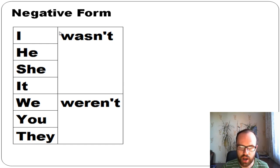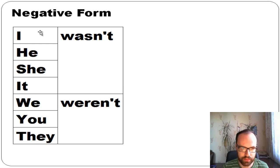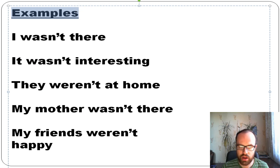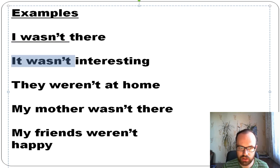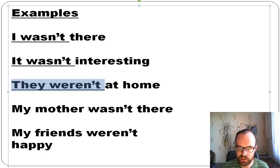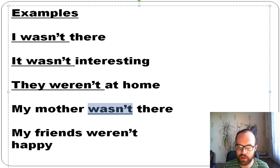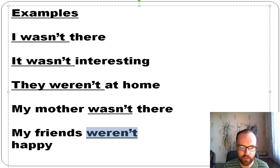For negatives with 'to be': use wasn't (was not) for I/he/she/it, and weren't (were not) for we/you/they. Examples: 'I wasn't there,' 'it wasn't interesting,' 'they weren't at home.' 'My mother wasn't there' — because 'my mother' means she. 'My friends weren't happy' — because 'my friends' means they.